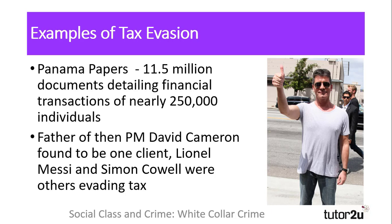Tax evasion scandals often become major headline news in contemporary society due to the nature of those involved. In 2016, almost 11.5 million documents detailing financial transactions from Western banks to investments in Panama were leaked to the press, highlighting around a quarter of a million clients who were evading tax by being paid into Panamanian bank accounts. These accounts, outside the jurisdiction of many Western tax agencies, hid revenues that individuals should have paid tax on in their country of residence. The scandal highlighted the widespread nature of tax evasion amongst the rich, and as the investment company Mossack Fonseca was only the fourth biggest investment firm in Panama, many more accounts remained secret.